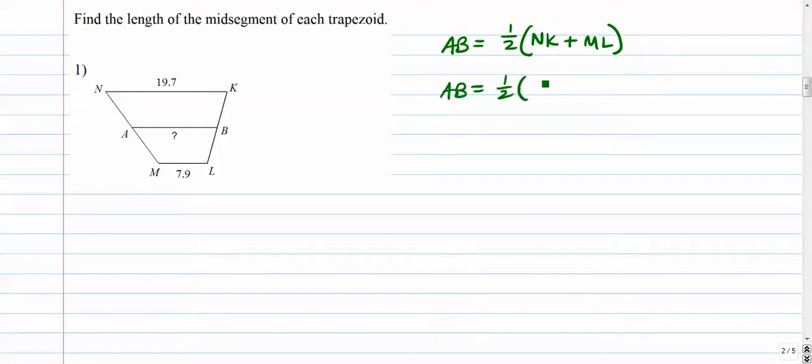So we're looking for segment AB. I know the length of segment NK and ML. All right, so all I want to do is just add those two together. Let's see, that's going to be 27.6. So 27.6 is that sum. And I cut that in half. And let's see, I get 13.8, I guess.